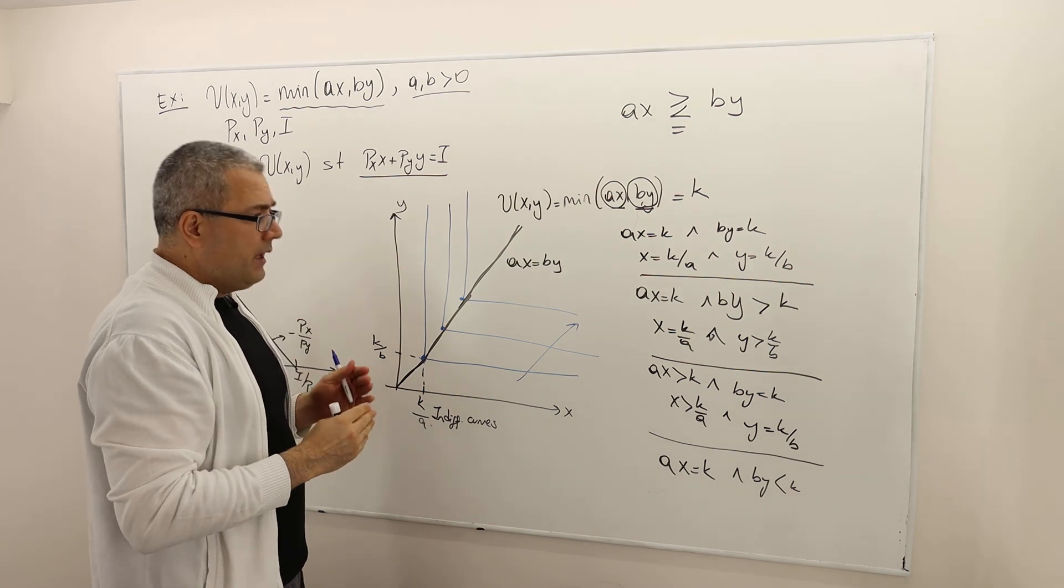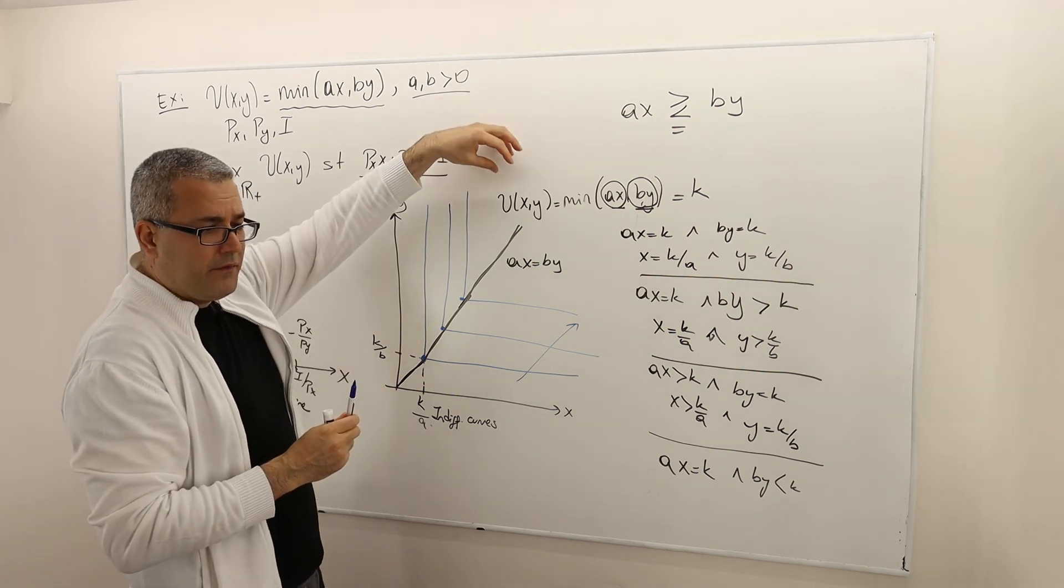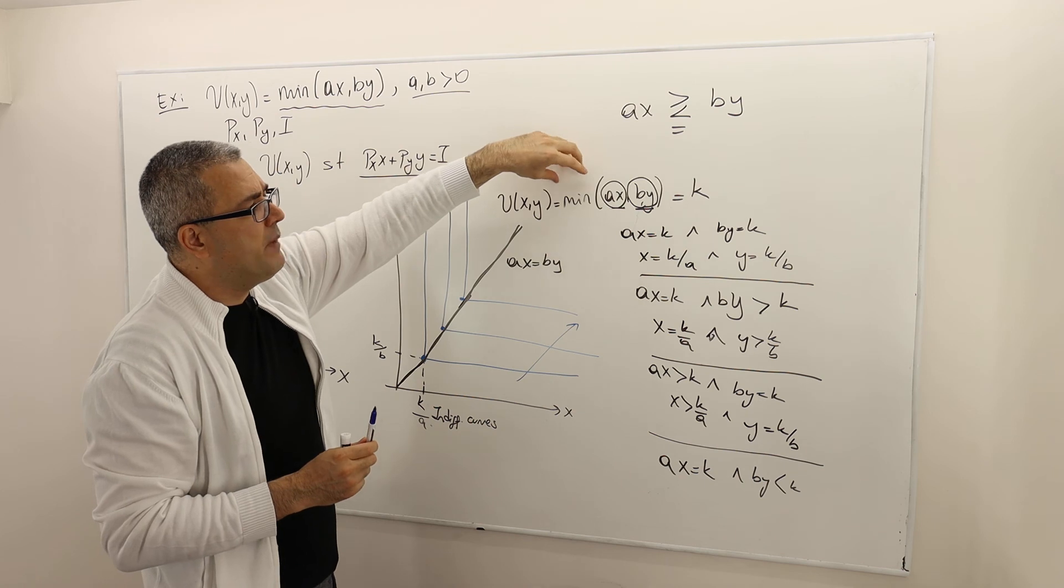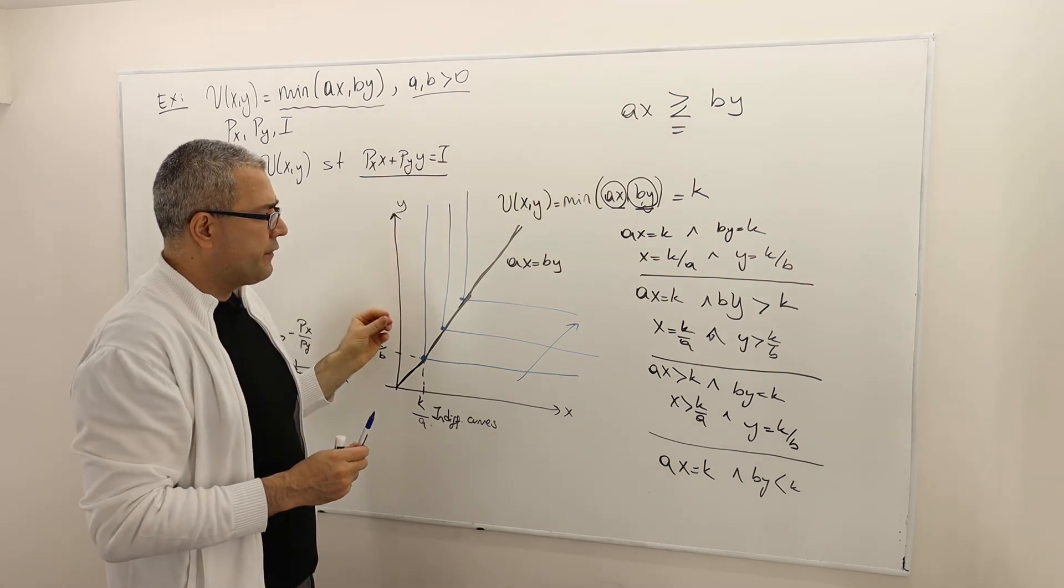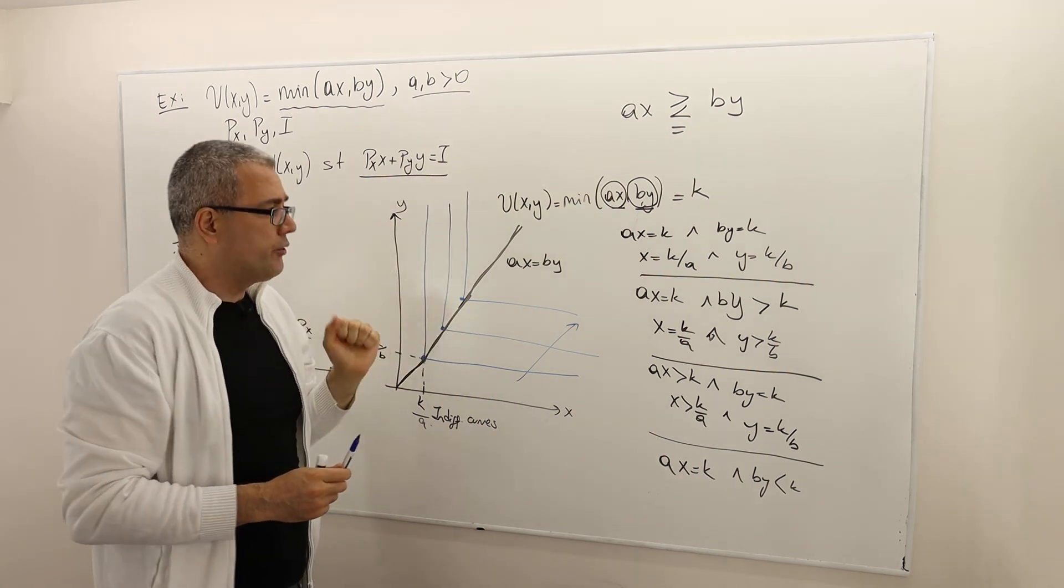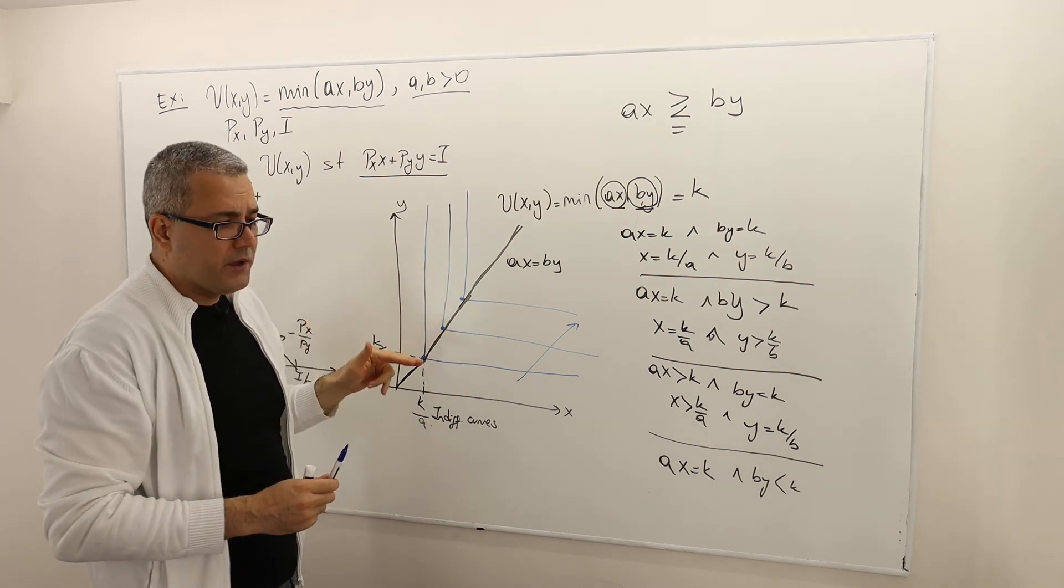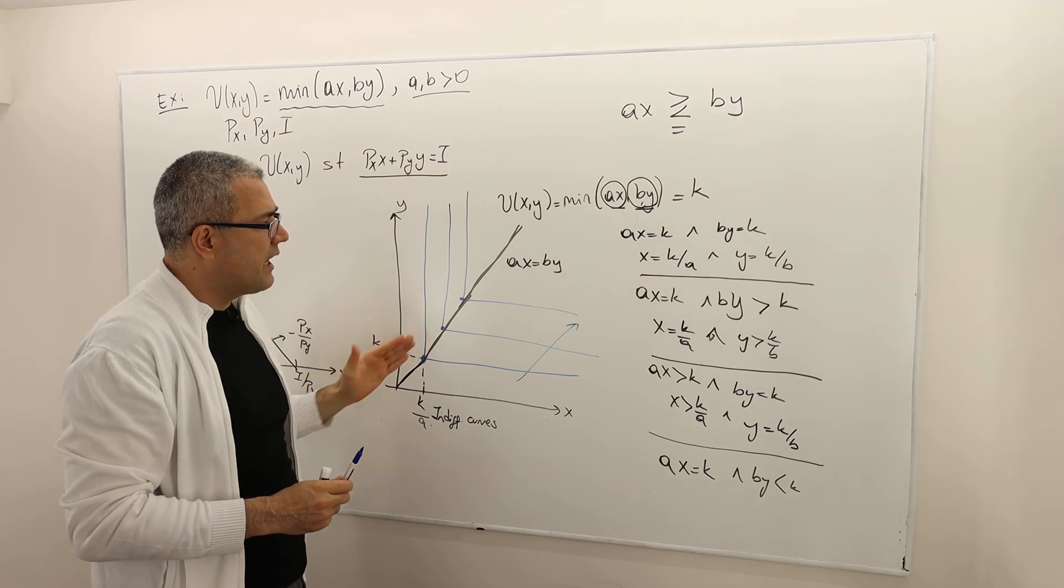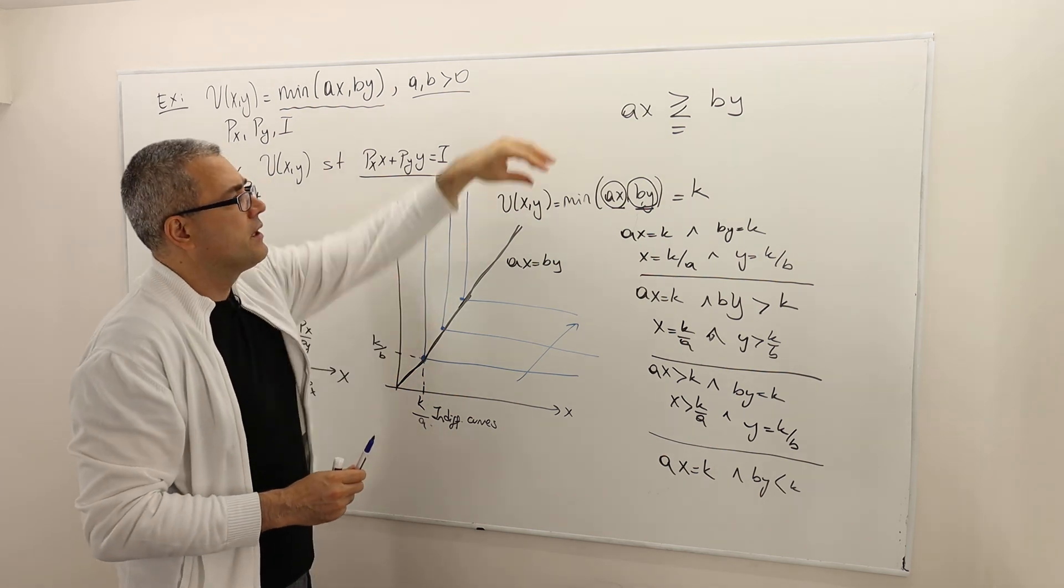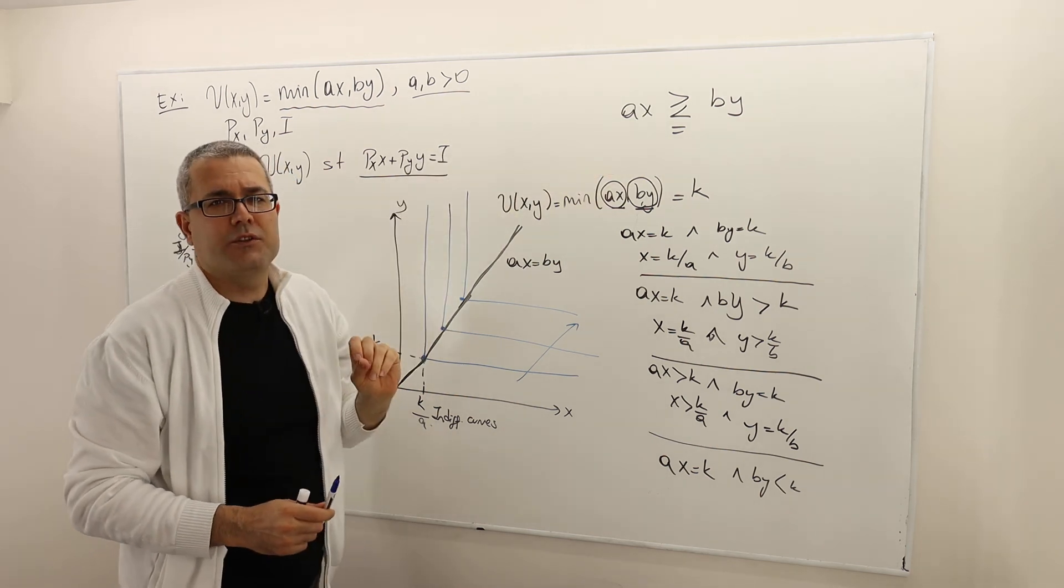So that means whenever I have a min function, the indifference curves are going to have L shape. That's true. And second, the kink points are going to move on the same straight line, which is first term equals the second term. Yes, that's true as well.